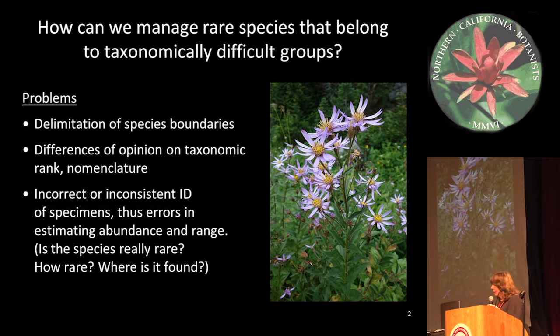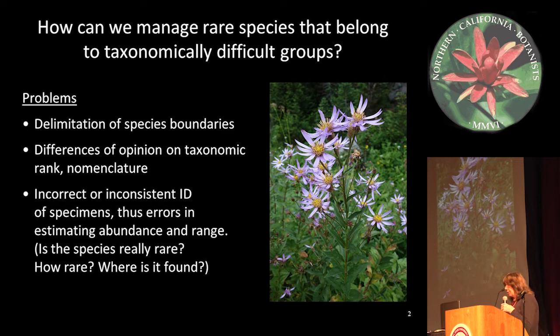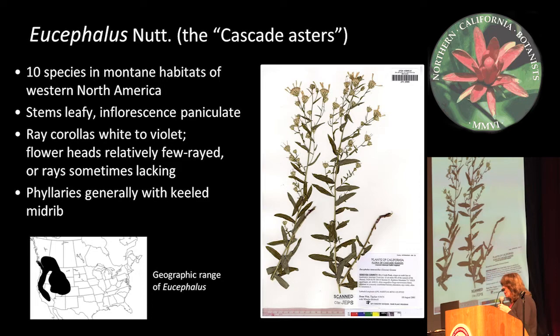All sorts of problems come up. We have difficulty with such groups in recognizing species boundaries for rare taxa, and there are often considerable differences of opinion on what to call the species, what rank to assign them. That leads to problems on the ground: incorrect or inconsistent IDs resulting from people having difficulty knowing where to draw the boundaries, or using different keys written by different people at different times. As a result, we often have difficulty knowing if these rare species are even really rare or what their geographic distributions really are.